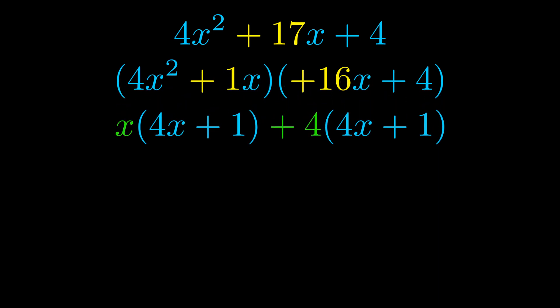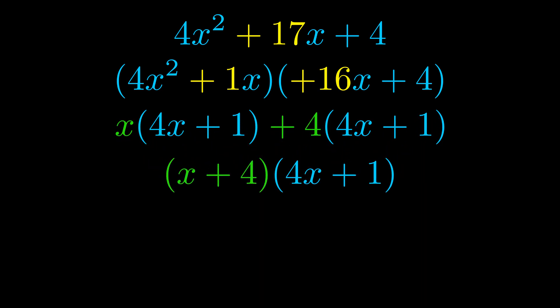We do that so that we can take the greatest common factor out of both terms. We can see the greatest common factor is now outside in green. Notice also how what remains inside the parentheses is the same in both cases — the blue values are the same. Those blue values will become one of our factors, and we combine the two green GCF values to get the other one. And that is our fully factored equation.